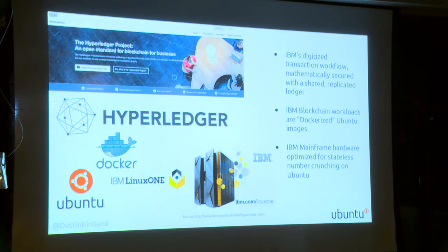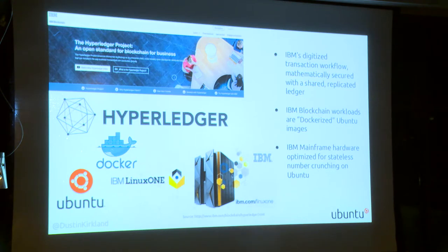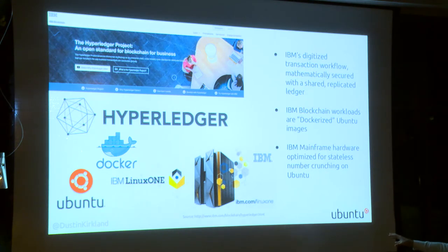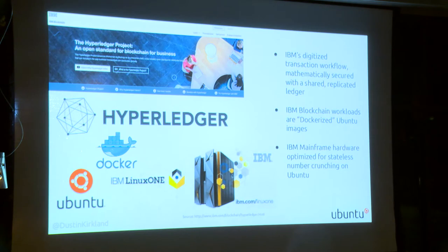Hyperledger is another case study — a different approach, quite popular in the financial services space. It's an open source project led by IBM — blockchain for business. You can do smart contracts and there's quite interesting provenance of data that Hyperledger can deliver. Hyperledger runs on many different platforms but is quite well optimized for the IBM mainframe. Most Hyperledger deployed today is running inside Docker containers on Ubuntu in mainframes — a containerized workload using some of the oldest and most classic hardware on the planet.